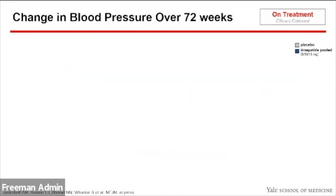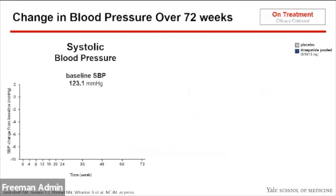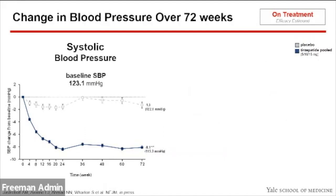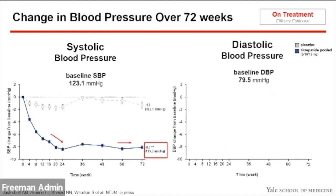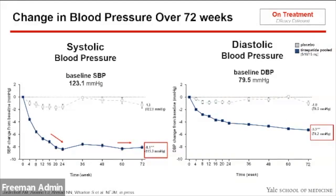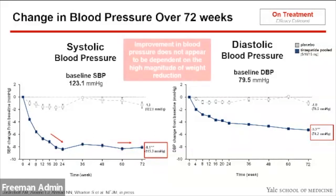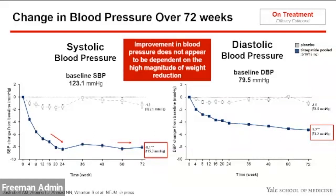In terms of change in blood pressure, systolic blood pressure was 123 at baseline and decreased throughout the study, especially during the dose escalation period up to 24 weeks, then plateauing with a decrease of 8 millimeters overall. Diastolic blood pressure also showed significant reduction — from 79 at baseline, decreasing by 5 millimeters down to 74. Improvements in blood pressure do not appear to be dependent on the high magnitude of weight reduction.